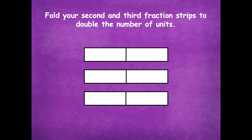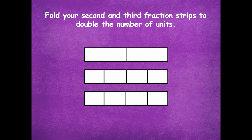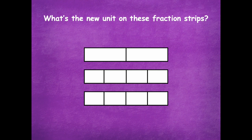Let's fold your second and third fraction strips to double the number of units. So just the second two — leave one of them in halves. When we've done this with previous fraction strips, you're just going to fold it in half again. So now you should have fraction strips that have four parts. The new unit on these fraction strips is fourths. The first one is halves and the second two are fourths.